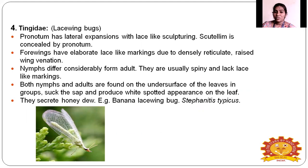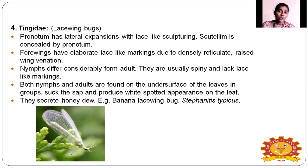Tingidae — the lace-wing bug. The pronotum has lateral expansions with lace-like sculpturing, and the scutellum is concealed by the pronotum. Four wings have elaborate lace-like markings due to densely reticulated, raised wing venation. Nymphs are quite different from adults — they are usually covered with spines and have black lace-like outgrowths. Both nymphs and adults are found on the undersurface of a leaf, feeding in groups and producing white spotted appearance on the leaf. They secrete honeydew. Example: banana lace-wing bug, Stephanitis typicus.